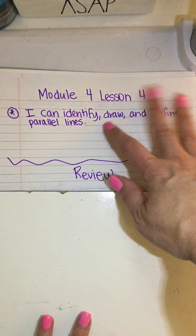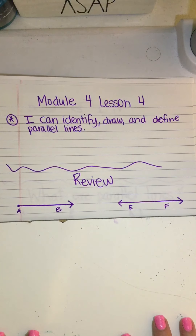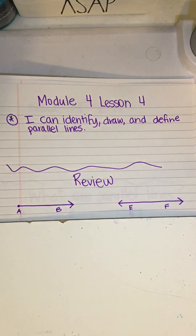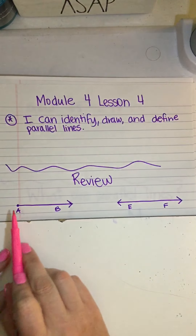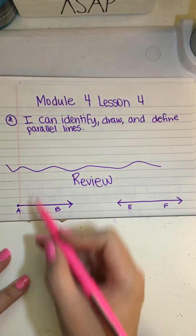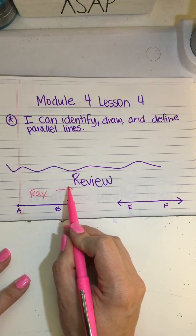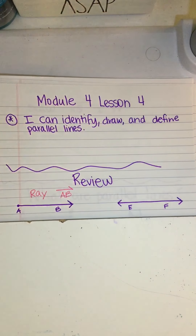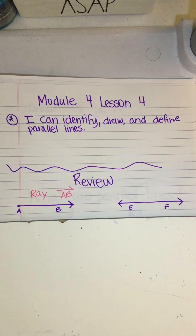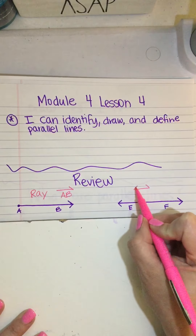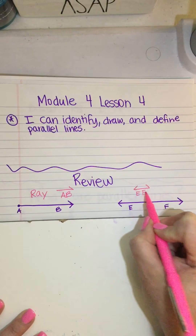Before we get into parallel lines, we're going to do a little bit of review from the last few days. Take a look at these two figures and think about how you would write them using the little symbols you've been taught. This first one has a point on the end and an arrow that extends forever — we call those rays. It is labeled ray AB. Without even writing the word 'ray,' this little symbol right above it means ray. The next one has two arrows that go on forever in each direction — that is a line. We indicate a line with half arrows on top and label it EF.